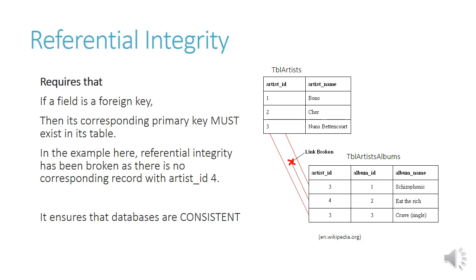The second record in table artists albums refers to an artist that does not exist, and this means referential integrity has been broken. When referential integrity is maintained, it ensures that the database is consistent.